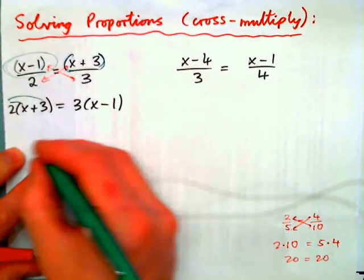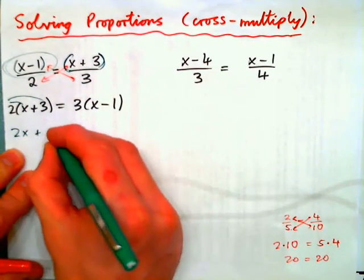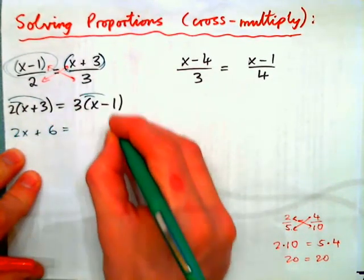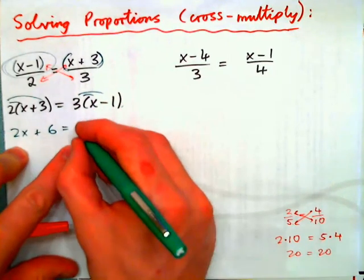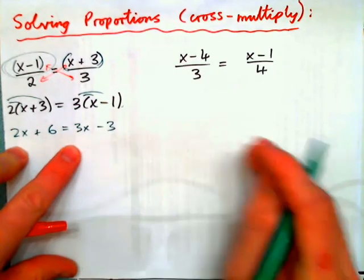So I need to get 2x plus 6 equals distribute 3x minus 3.